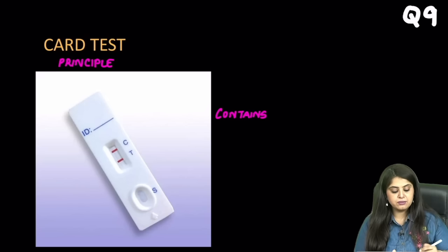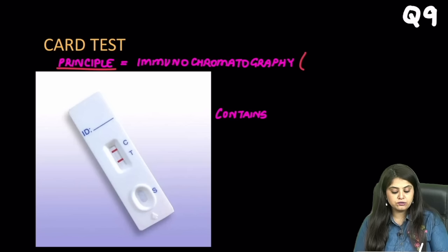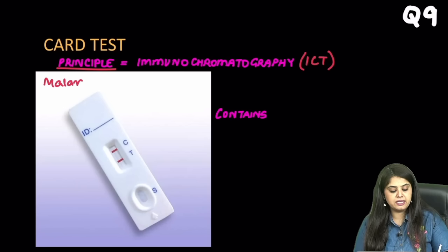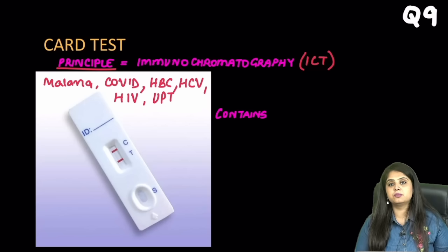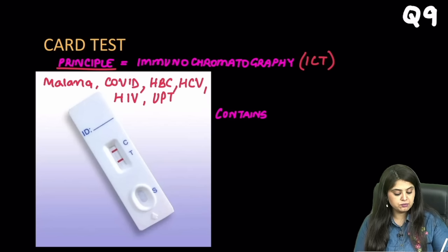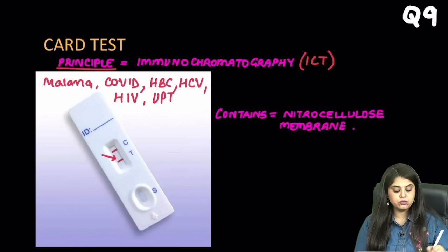Coming to the ninth image: a card test. They will not ask you to name it — they will ask the principle of every card test, which is immunochromatography testing, also written as ICT in the paper. The card test could be for malaria, COVID, hepatitis B, hepatitis C, or HIV (requiring blood samples), or urine pregnancy (urine sample). The principle for all is immunochromatography. Inside the card you can see a membrane on which the blood or urine flows — that is a nitrocellulose membrane, another PYQ.